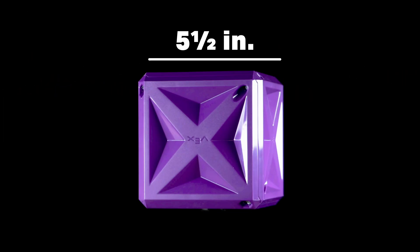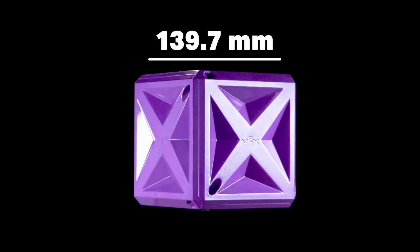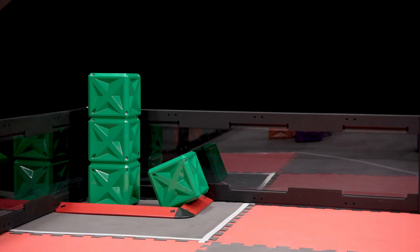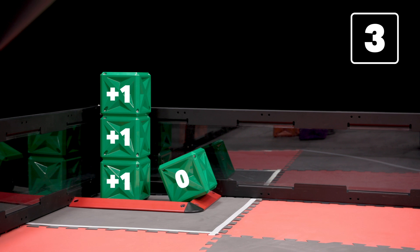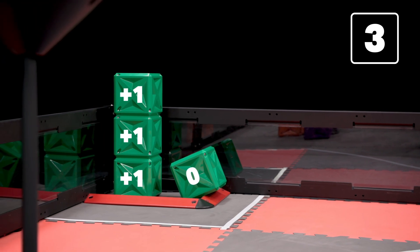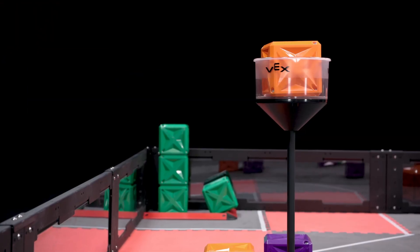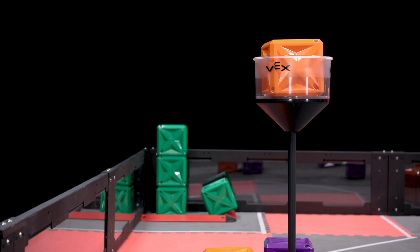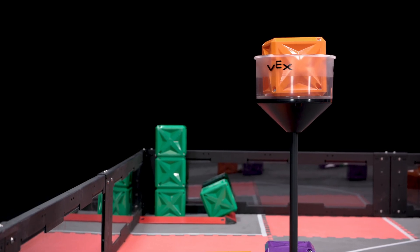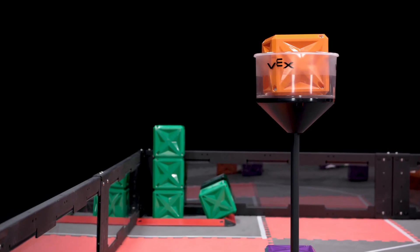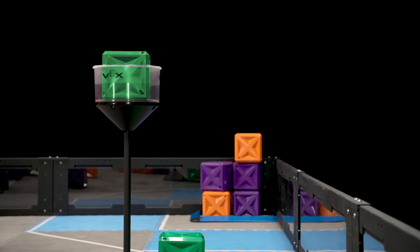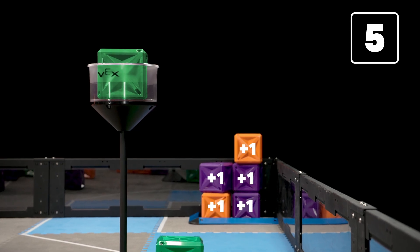Cubes are five and a half inches across, or 139.7 millimeters, and are worth at least one point when scored in a goal zone. However, the exact value of each cube is determined by how many cubes of that specific color have been placed in towers. All cubes start with a base value of one point.